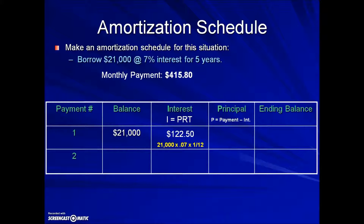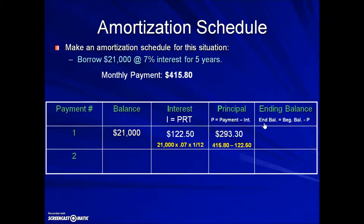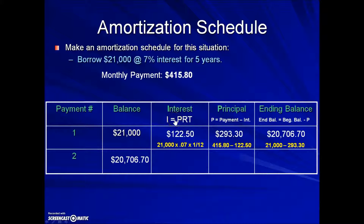That's the portion of our monthly payment that is going towards the cost of borrowing this money. What's left over constitutes the principal. To calculate the principal, we take the monthly payment of $415.80 and subtract the interest, resulting in $293.30. It's this principal portion that reduces the amount that we owe. Taking the beginning balance minus the principal will result in our ending balance.